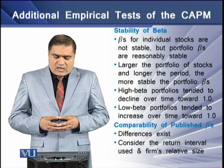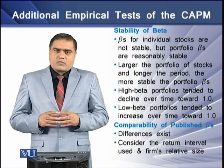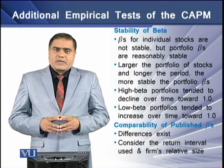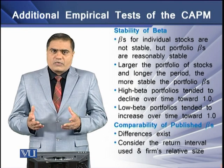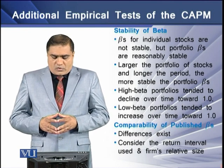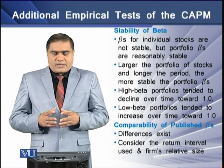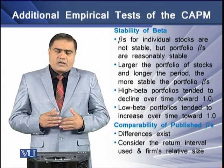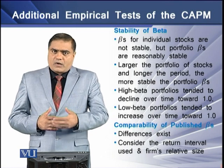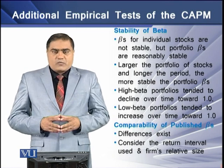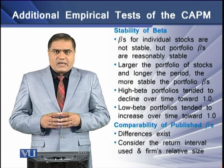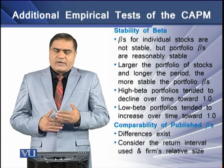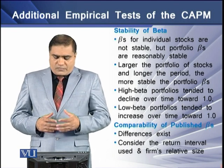We also see that high beta portfolios tend to decline over time toward 1, while low beta portfolios tend to increase over time towards 1. Different institutions and professional firms publish betas on stocks and other market indices, and differences exist among the beta values estimated by these professional financial firms.